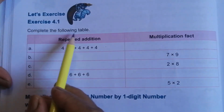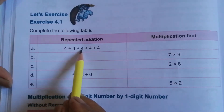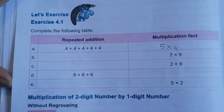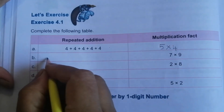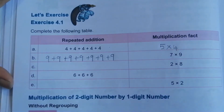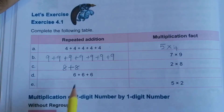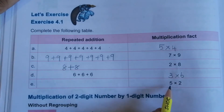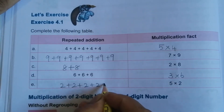Exercise 4.1: Complete the following table showing repeated addition and multiplication facts. Four is added 5 times: 5 × 4. Next, 7 times 9 — you add 9 seven times. Then 2 times 8 — you add 8 twice. Here, 6 is added 3 times: 3 × 6. And 5 × 2 — you add 2 five times.